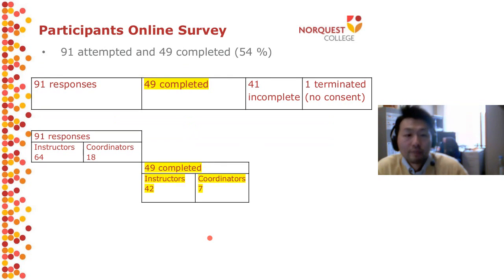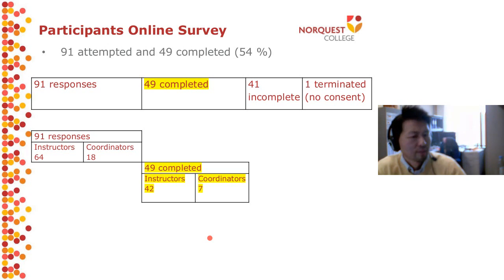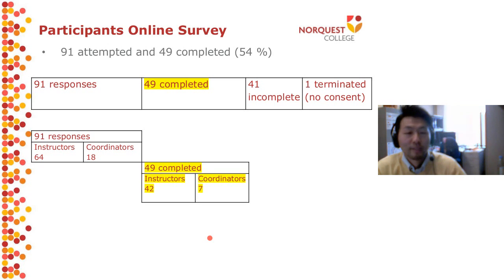As for the online survey, 91 people attempted it and 49 actually completed the survey — a completion rate of 54 percent. We have about 550 ATASO members, and according to the business manager, 91 attempts isn't too bad given that not many people take online surveys.